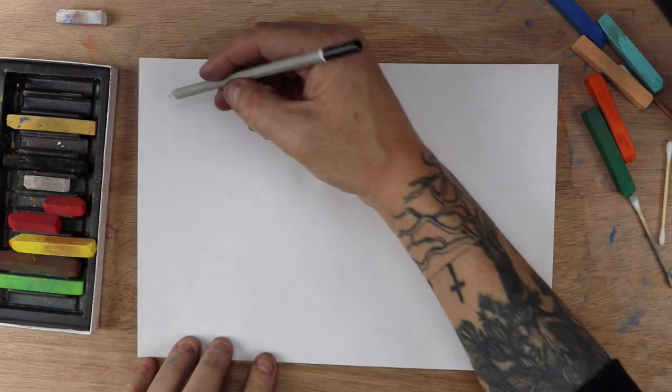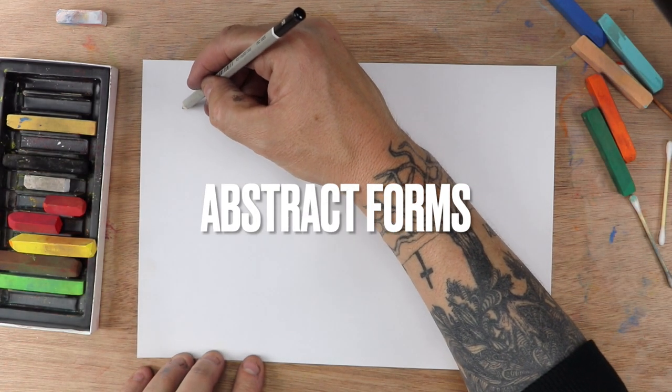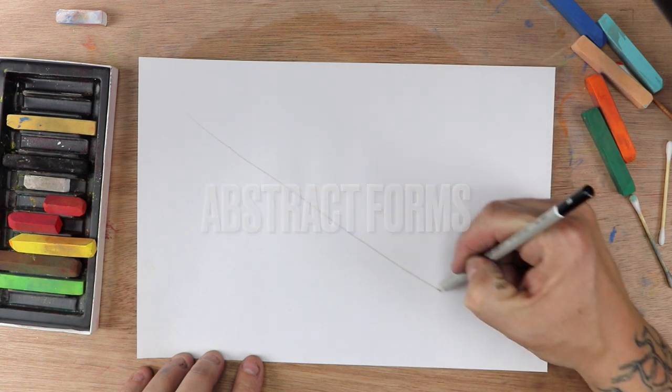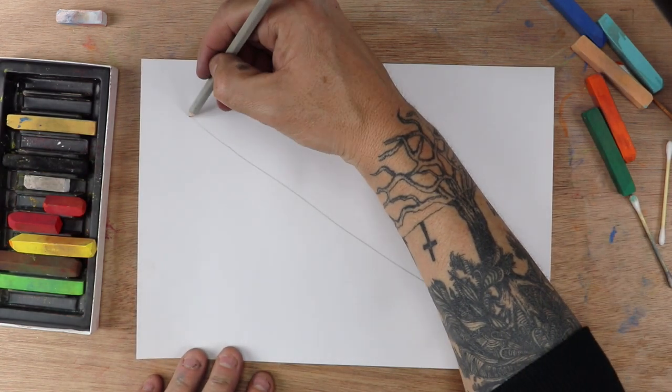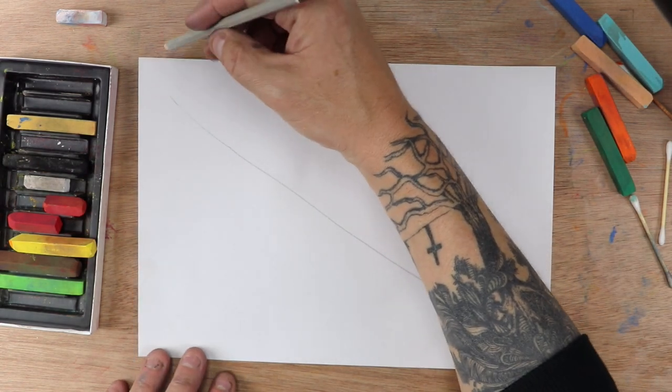Start off with a single line that's going diagonally down your paper. And then what we're going to do is create forms that kind of attach to the line.